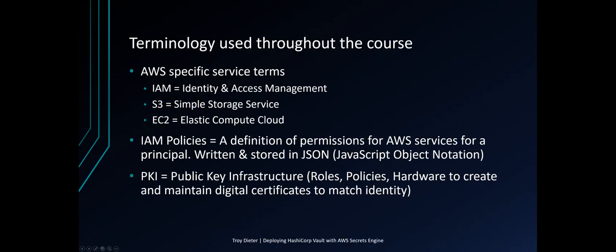In this lecture, we're going to cover AWS-specific service terms, including IAM, Identity Access Management; S3, Simple Storage Service; EC2, Elastic Compute Cloud; and IAM Policies, which are a definition of permissions for AWS services for a principal. These are all written and stored in JSON, which is JavaScript Object Notation.